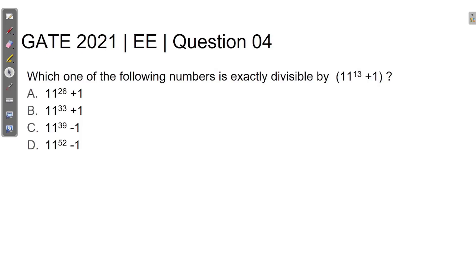The options are: Option A — 11 raised to the power 26 plus 1. Option B — 11 raised to the power 33 plus 1. Option C — 11 raised to the power 39 minus 1. Option D — 11 raised to the power 52 minus 1.